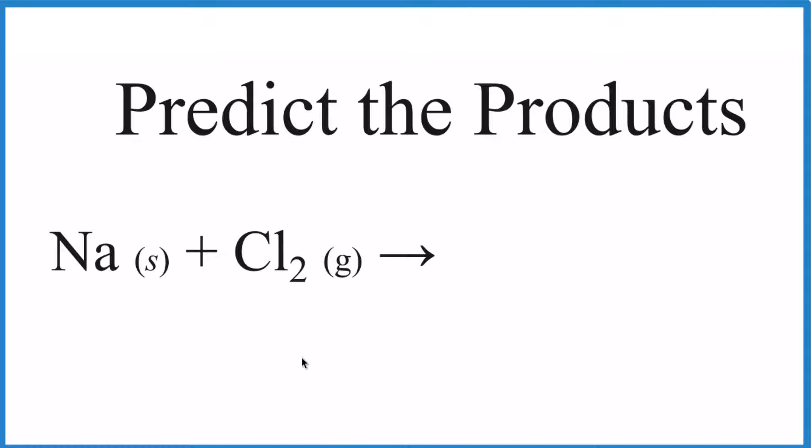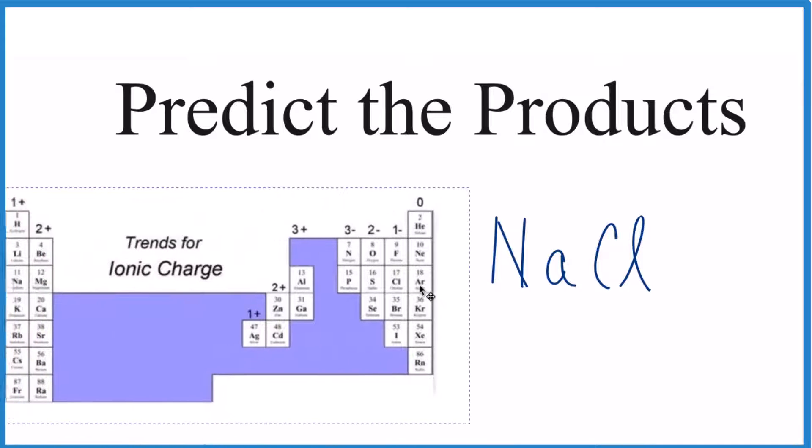We could just write NaCl as our product here, but we need to think about the charge because we have a metal and a non-metal. It's going to be an ionic compound, so on the periodic table you can look at charge here.